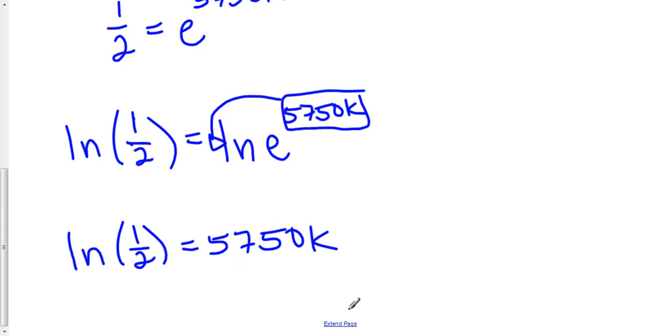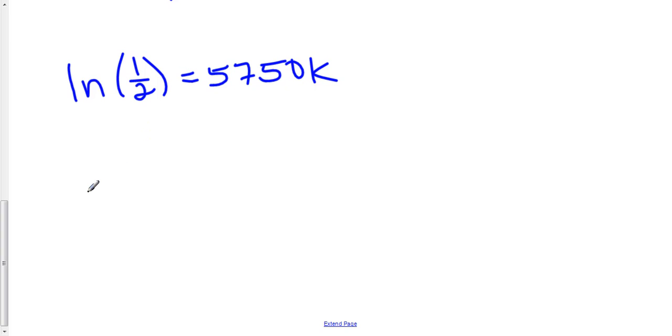Now let's solve for k. k is equal to the natural log of one-half over 5750. Now remember, we're looking at exponential decay, which means that our k, the constant of growth, should be negative. But if you look at it as it is now, this doesn't look negative.